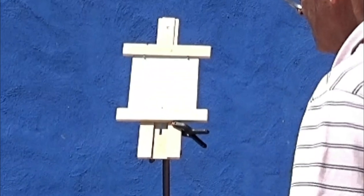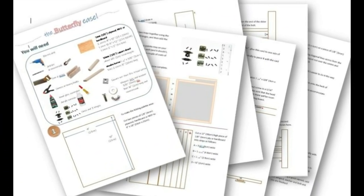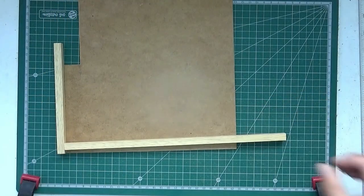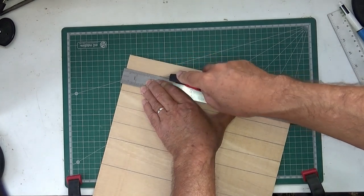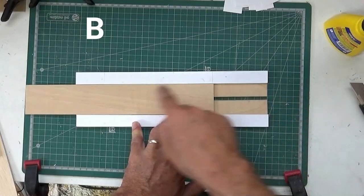When you buy the pack you get a PDF document with all the written instructions for making the easel step by step and there are videos that go with each step of the process to show you exactly how to do it.